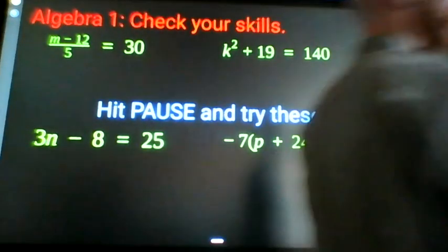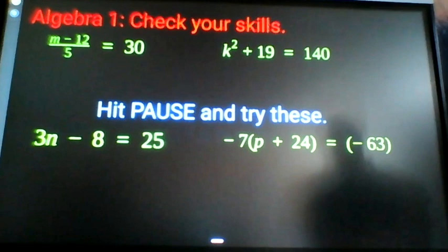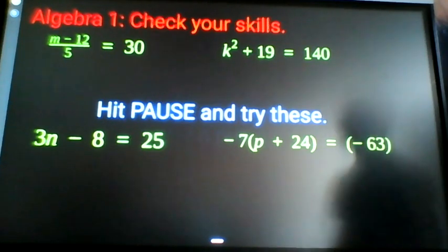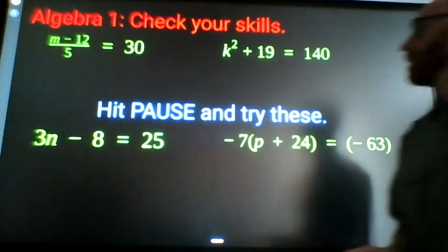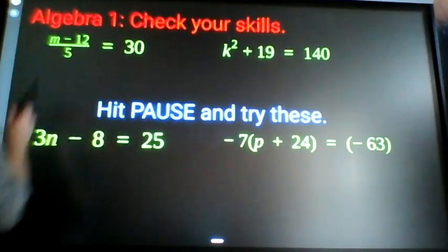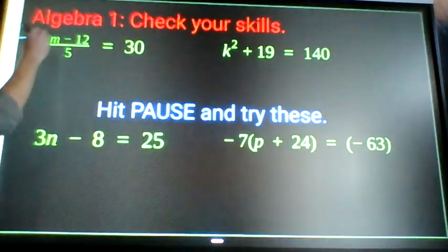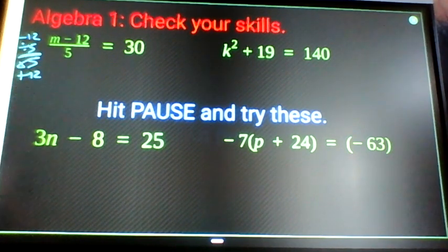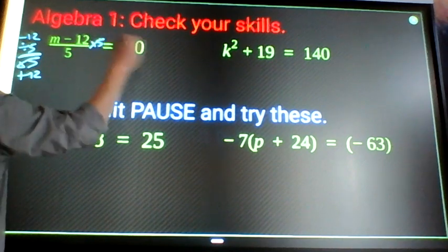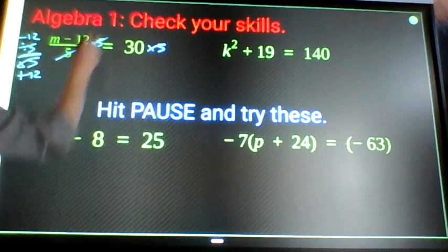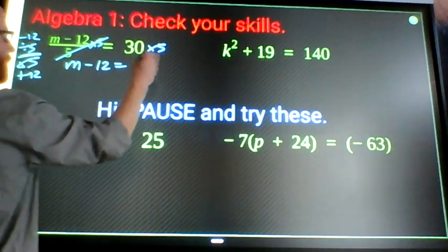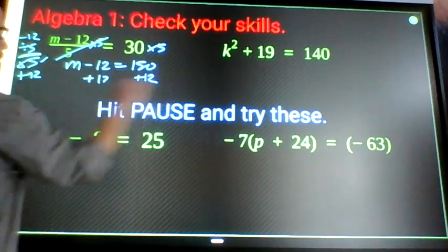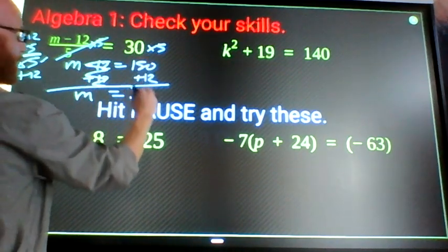If you didn't hit pause and try these yet, I'm about to go through them. Hit pause, you should try this on your own to check yourself before watching me. Start right here: what's happening to m? Minus 12, then divide by 5. What am I going to do? Times 5 and then add 12. Opposite steps, opposite order. So times 5: m minus 12 equals 150. Add 12: m equals 162.